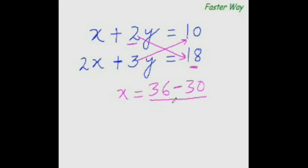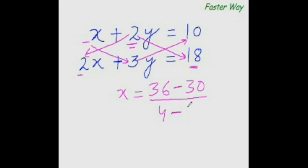Now to find the denominator, multiply this number with this number — so 2 times 2 is 4 — and subtract from it the product of this number and this number. There is no number there so it is 1, so 1 times 3 is 3. The answer is 36 minus 30 is 6, and 4 minus 3 is 1, so 6 over 1 is nothing but 6. So x equal to 6.